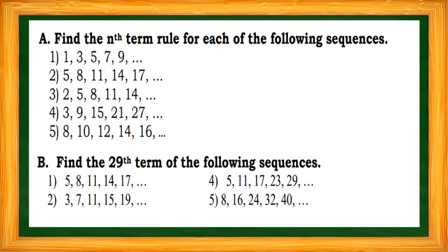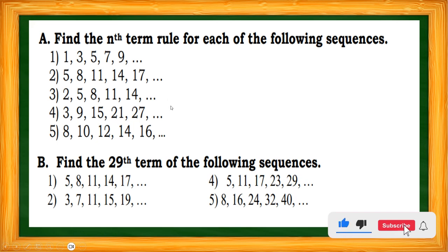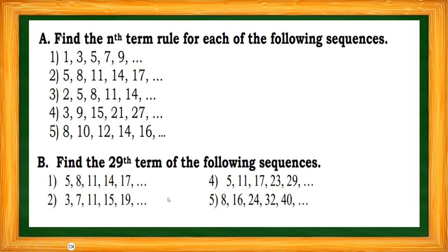Let's have some examples for you to try. Find the rule for each sequence: number one, is it n minus 1, n plus 2, or n plus 3? For 5, 8, 11, 14, 17 — is the rule adding by 3, 4, or 5? Also for 2, 5, 8, 14, find the rule. Then for letter b, find the 29th term using the formula: a_n equals a_1 plus (n minus 1) times d.